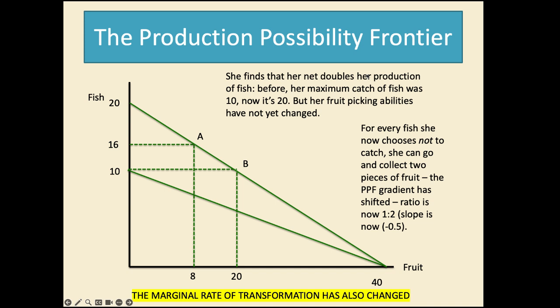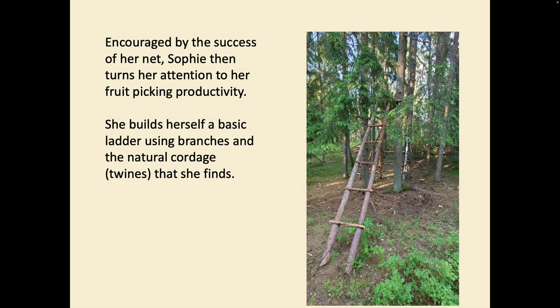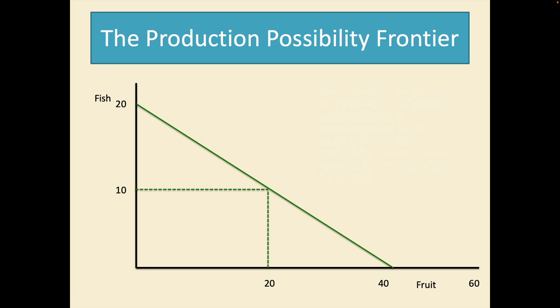So encouraged by her success she then turns her attention to her fruit picking productivity. She builds herself a basic ladder using branches and the natural cordage that she finds around the woods. So we now have a new production possibility frontier and we're going to draw it from say 20 fish over to 60 pieces of fruit, the maxima that she can produce.